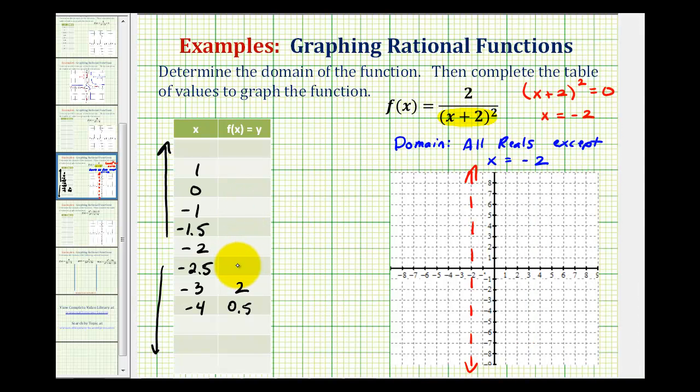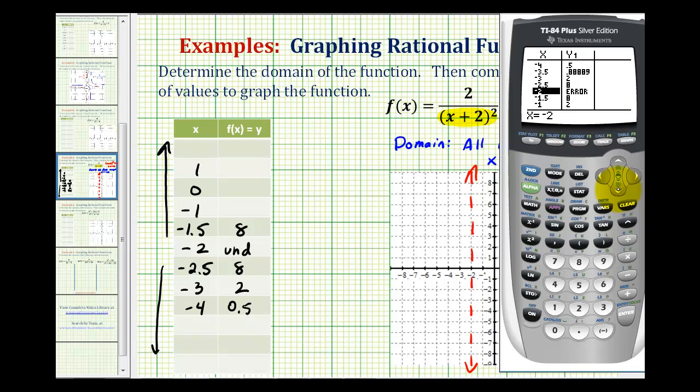So this is 8. This is undefined. This is also 8. And now we'll scroll down. Notice at -1, y is 2. At 0, y is 0.5, which would be the y-intercept. And at 1, y is 0.2 repeating, which we'll go ahead and round to 0.22.